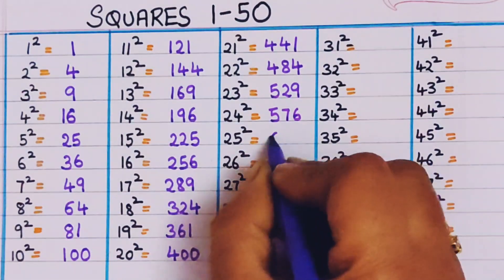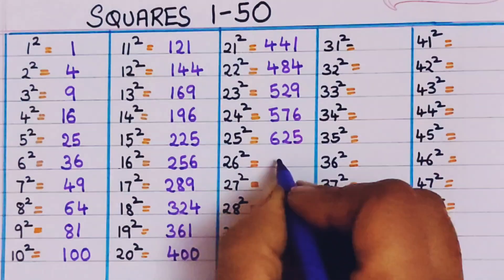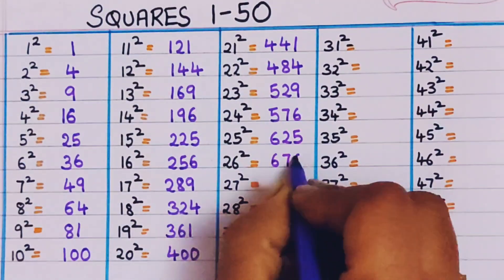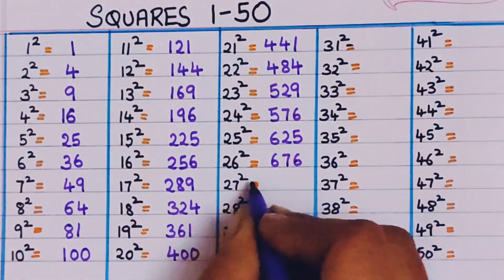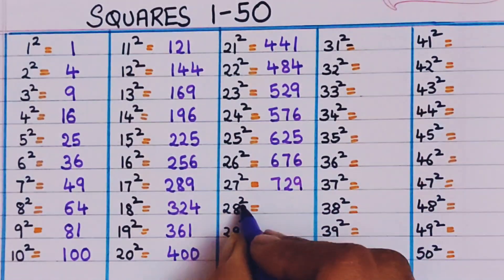25 square, 625. 26 square, 676. 27 square, 729.